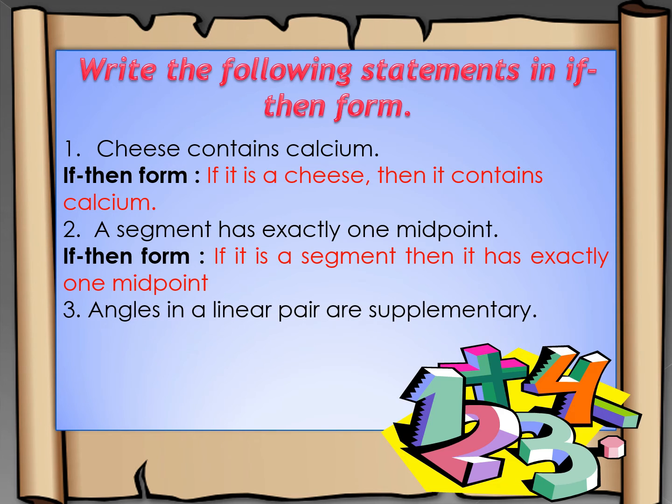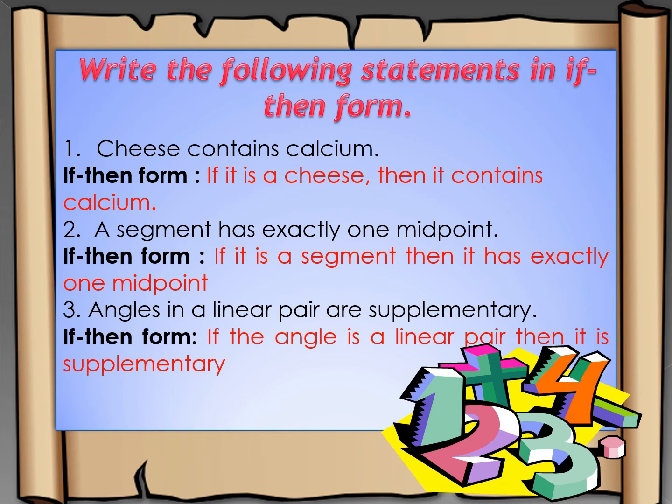Example number three: Angles in a linear pair are supplementary. What would be the if-then form of this statement? The if-then form of this statement is: If the angle is a linear pair, then it is supplementary.